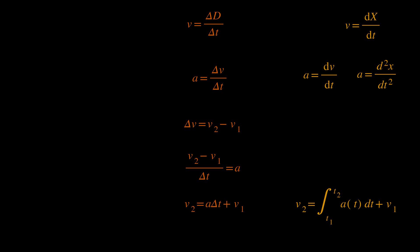If the acceleration is not constant, we can say that v2 is equal to the integral of acceleration over time plus the initial speed v1.